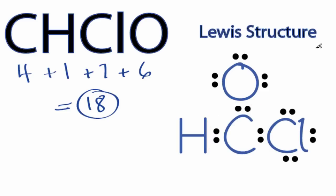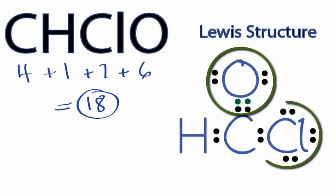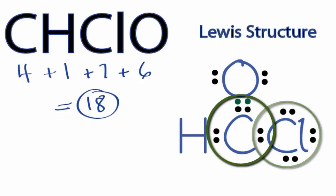We'll take 2 valence electrons from the oxygen atom, which tends to form double bonds, and share that between the oxygen and the carbon. We're still only using 18 valence electrons, but oxygen still has 8, chlorine still has 8, and the central carbon now has 8. So by forming the double bond, we were able to complete the octet for carbon.